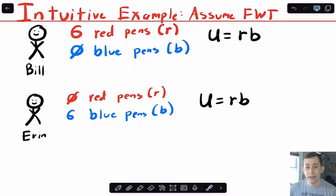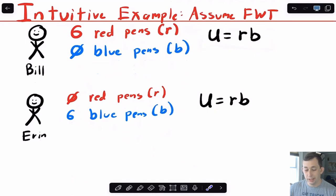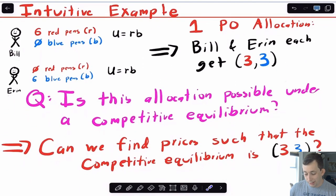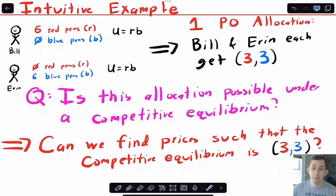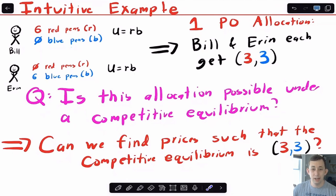Let's do an intuitive example. Bill and Aaron are trading pens: Bill currently has all the red pens and Aaron currently has all the blue pens. Both have the same utility function — utility equals red times blue — so both Bill and Aaron like a mixture of red and blue pens; they have convex and monotonic preferences. One Pareto optimal allocation is that Bill and Aaron each get three of each pen — three red and three blue. We're asking: is this allocation possible under a competitive equilibrium?